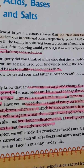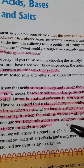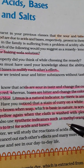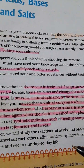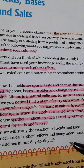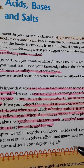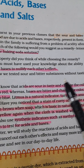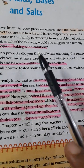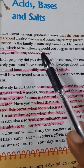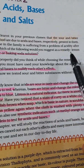Certain food tastes bitter, certain food tastes sour — like lemon, which tastes sour. You can detect the taste difference in many foods because of the presence of acids and bases.